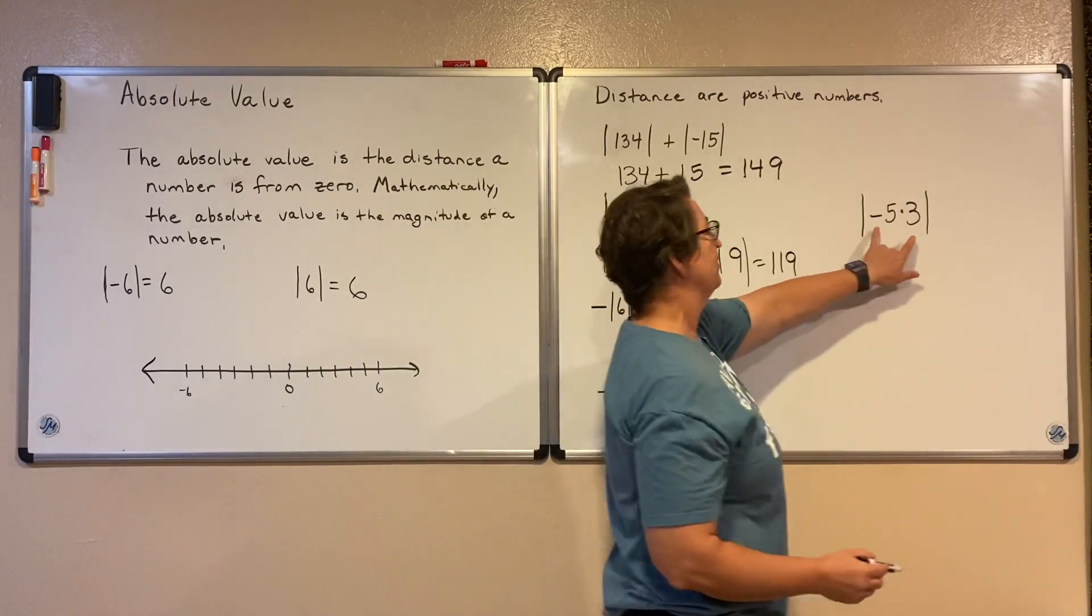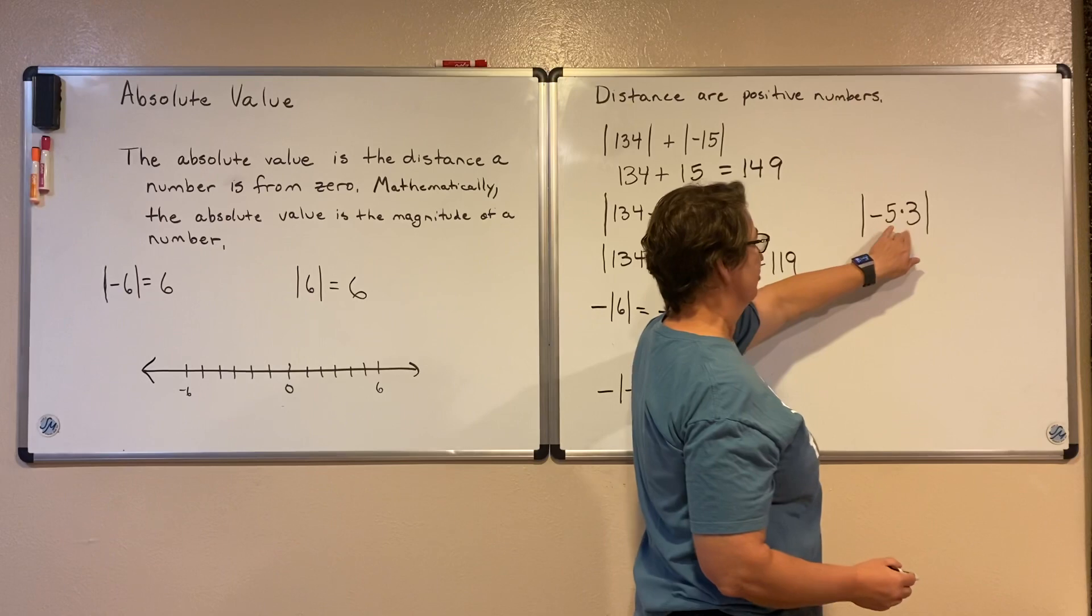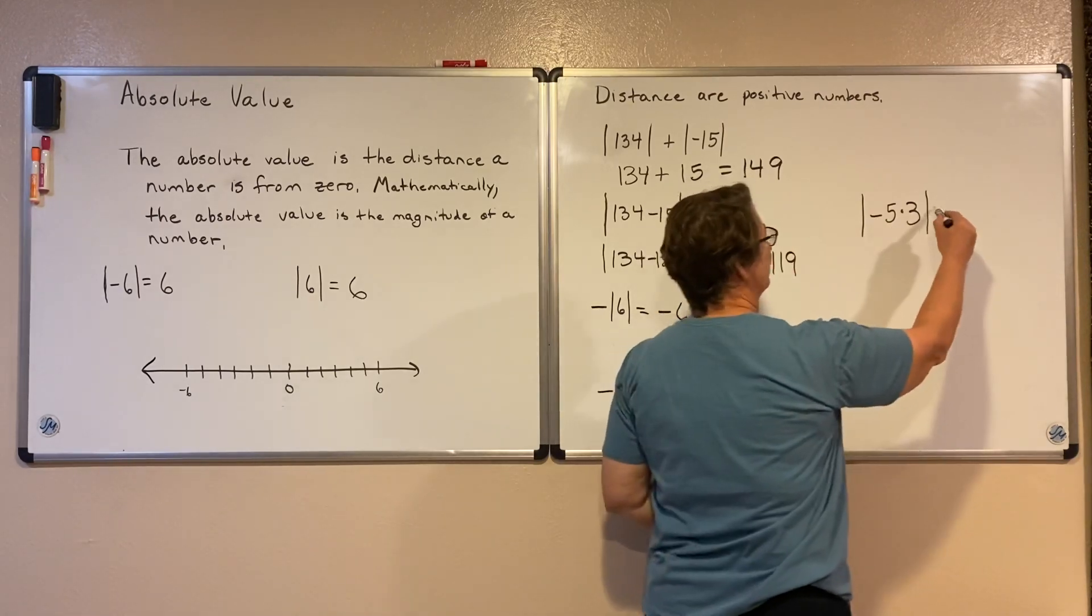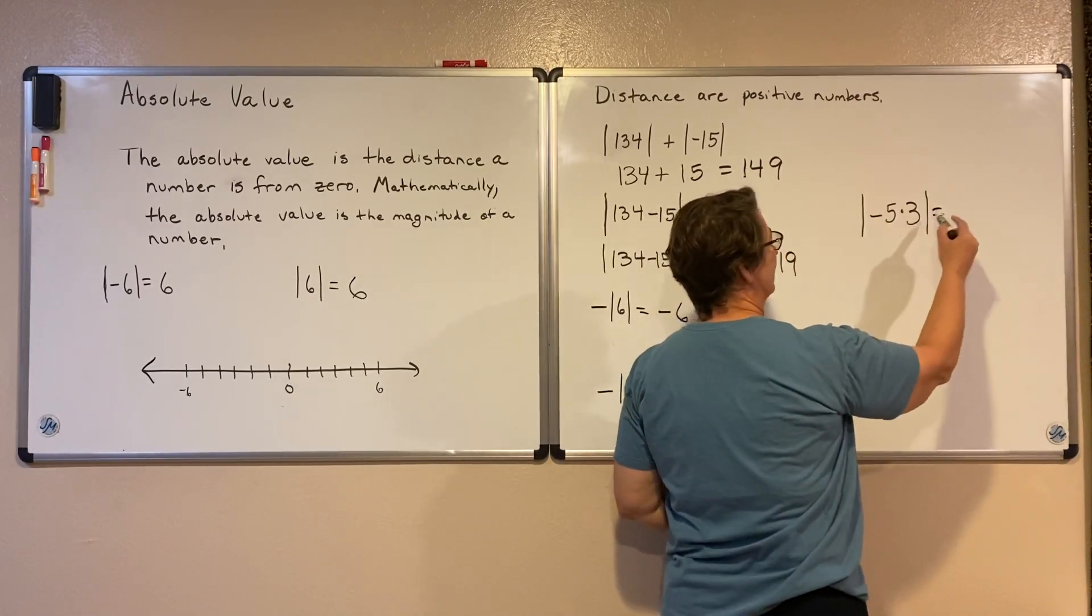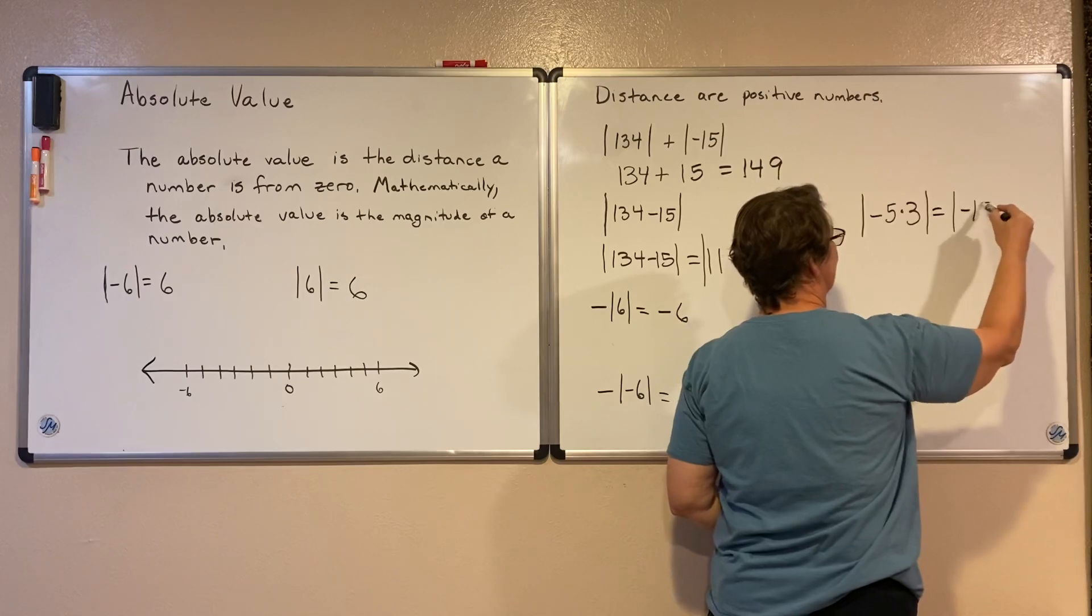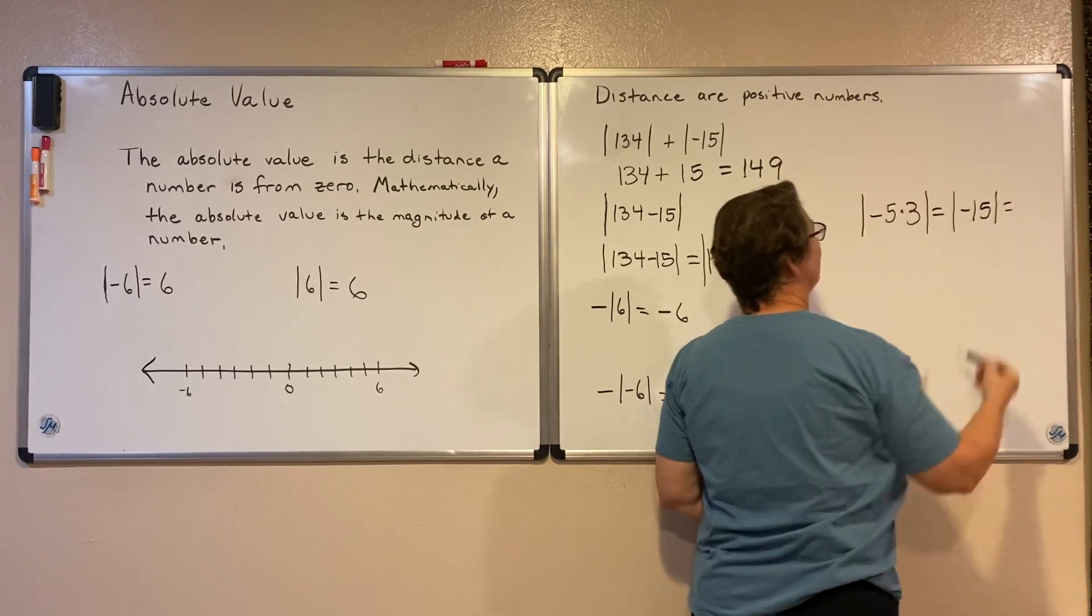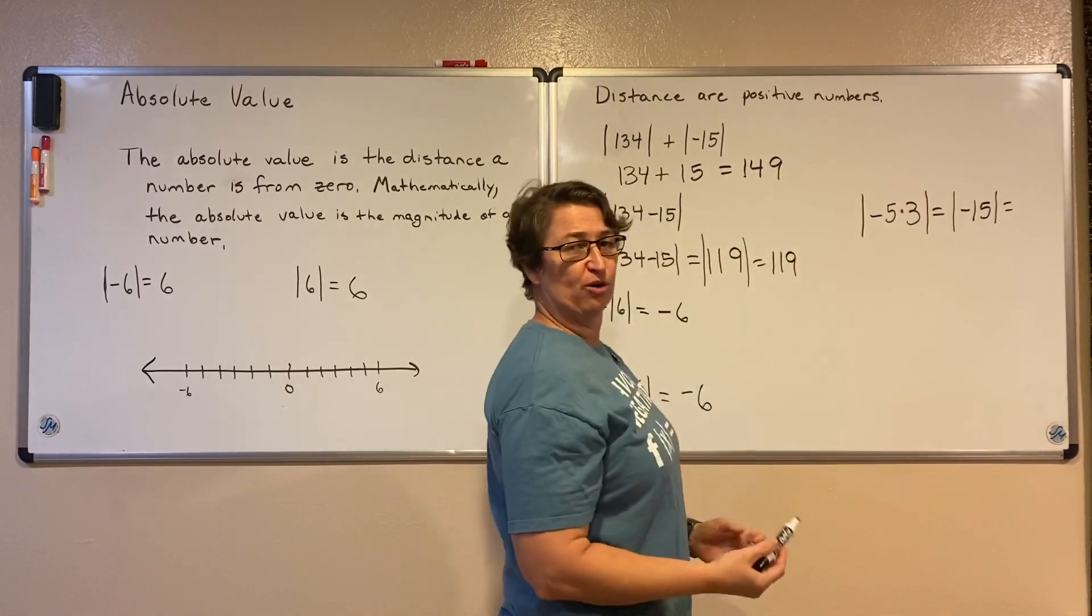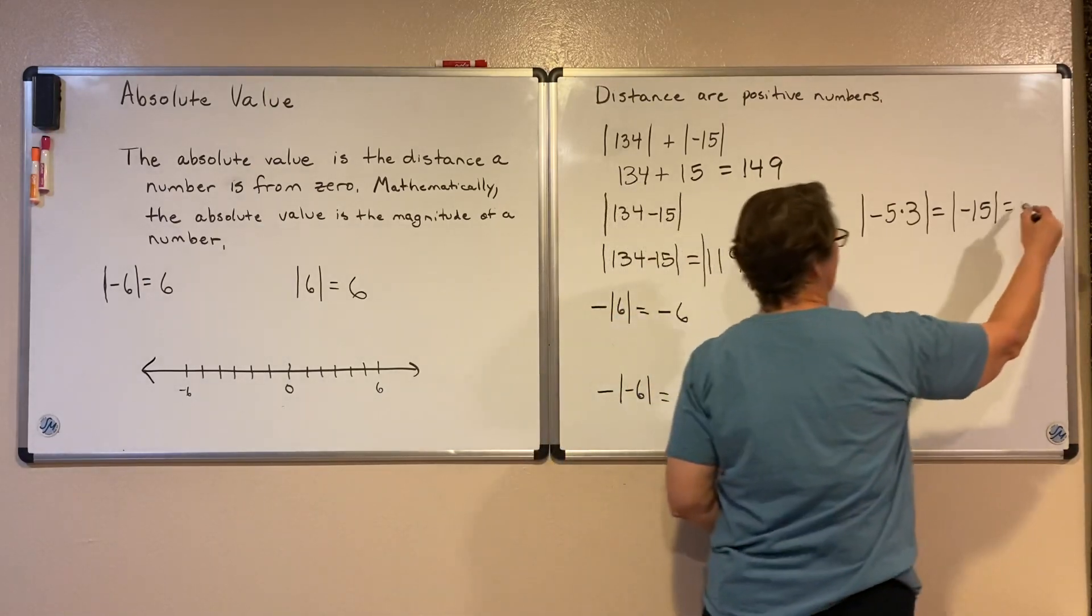One last example. Again, inside my grouping symbol first. So I have negative 5 times 3, gives me a negative 15. And how far away is negative 15 from zero? It's 15 units.